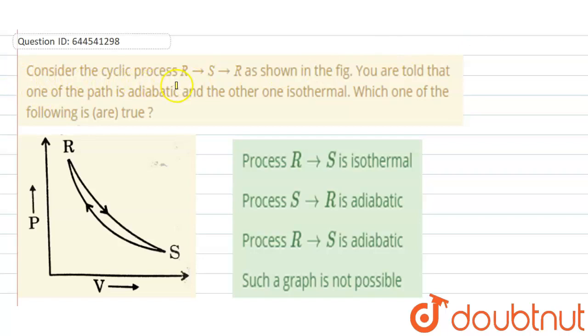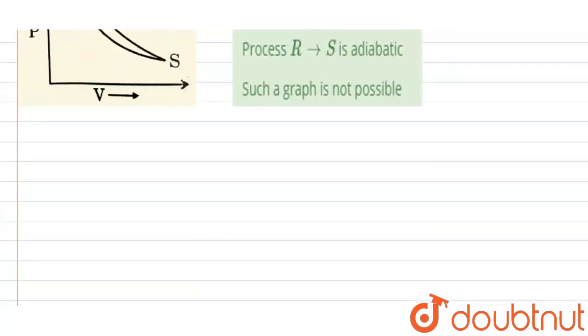Hello everyone. Here our question is: Consider the cyclic process R to S to R. This is your cyclic process in the figure. You are told that one of the path is adiabatic and the other path is isothermal. So out of these two curves, one is adiabatic and one is isothermal. Which one of the following is true?